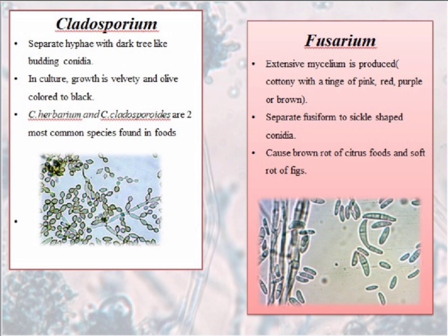Next is Fusarium. In this case, extensive mycelium is produced that is cottony with a very light tinge of pink, red, purple or brown. Septate fusiform to sickle-shaped conidia are formed.